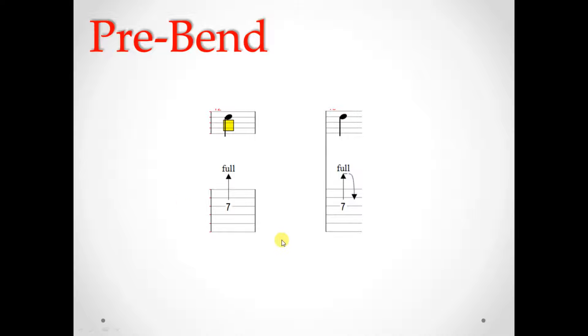These are examples of pre-bends. What we're going to do is we're going to bend this note up a full-step and then pick it. In this example, we're going to bend it up a full-step, pick it, and then release it. Here's an example of both of those.